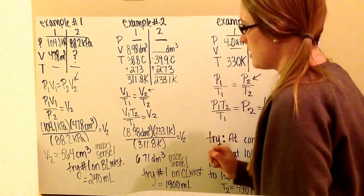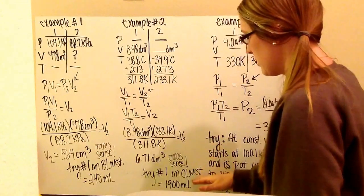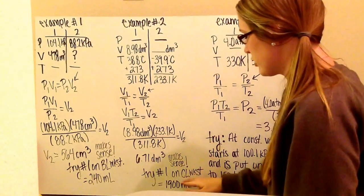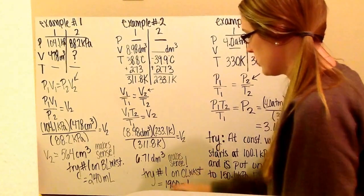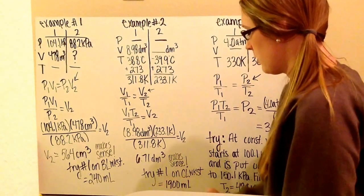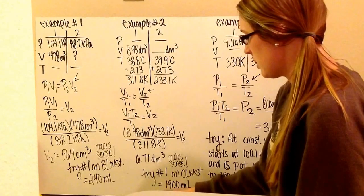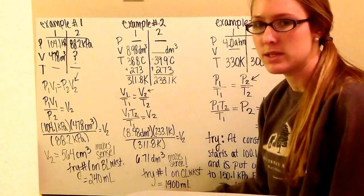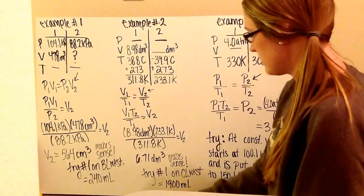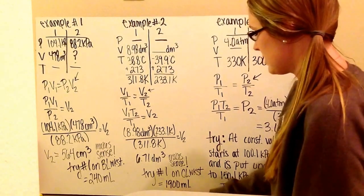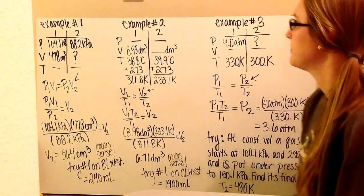Once you've copied this down, go ahead and try the first problem on your Charles' Law worksheet. With proper significant figures, you should get 1,900 milliliters.